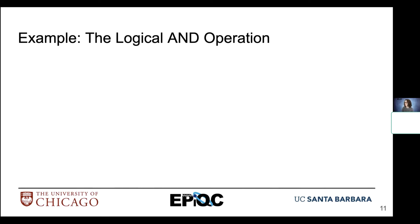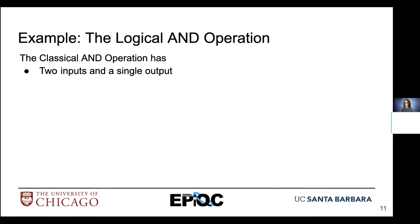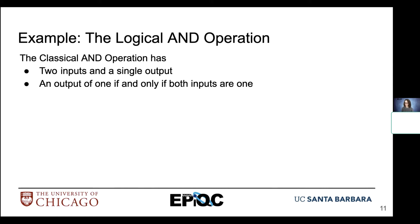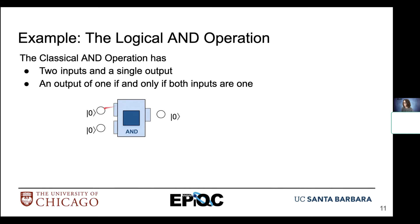Let's look at an example — the logical AND operation. The classical AND operation has two inputs and a single output. The output is one if and only if both inputs are equal to one. We're going to look at that with information encoded as black and white balls. If we have two inputs of zero and zero passing through an AND gate, zero and zero is going to result in zero.